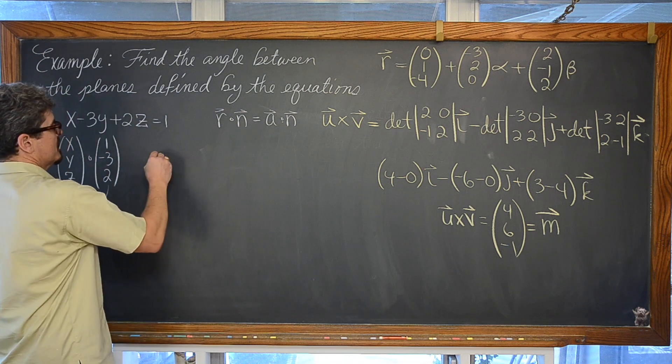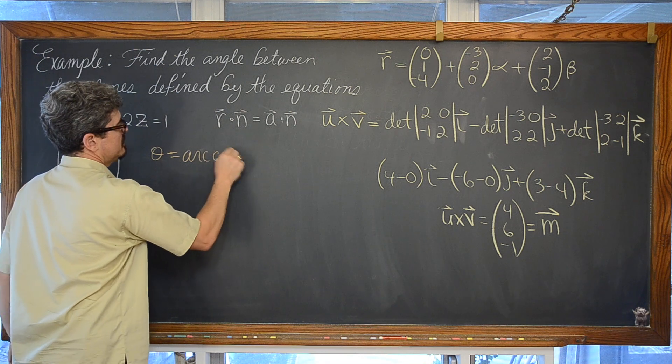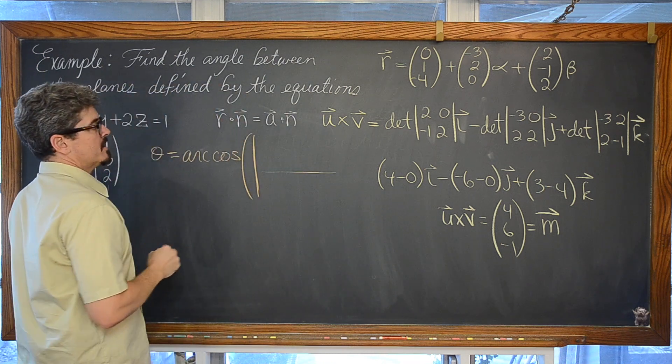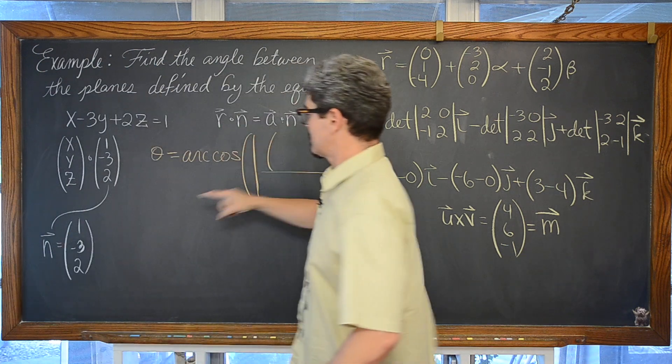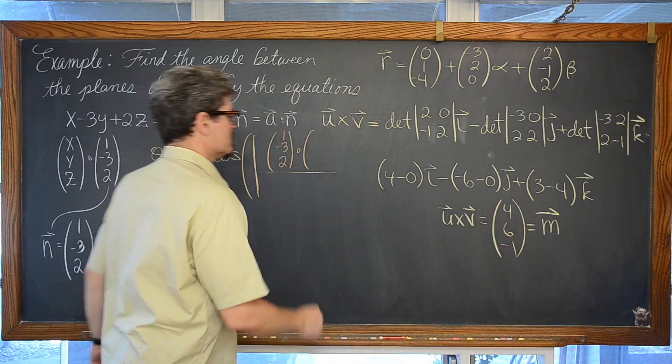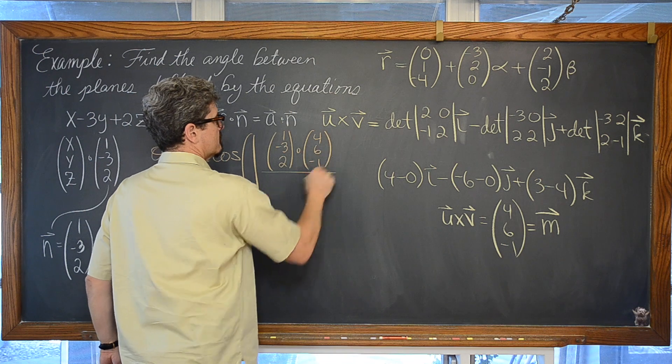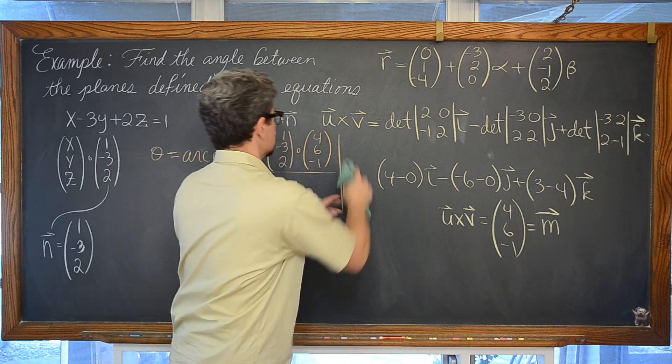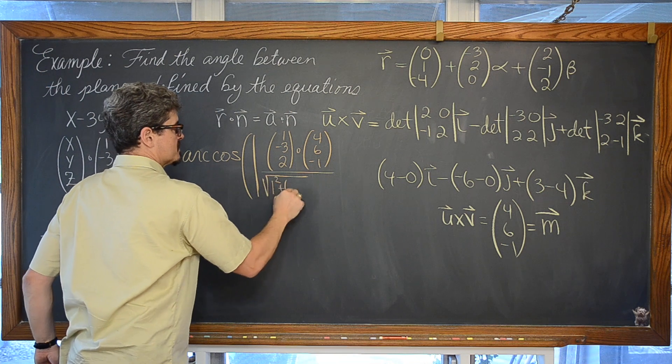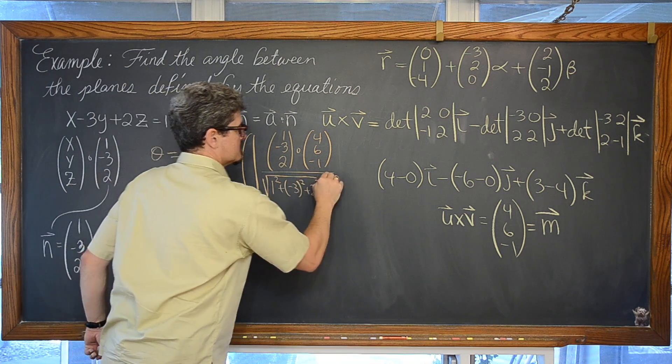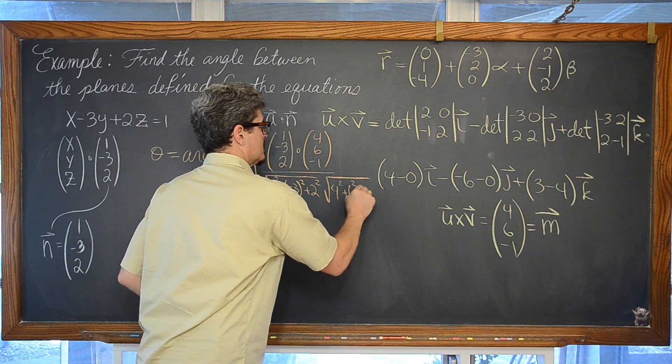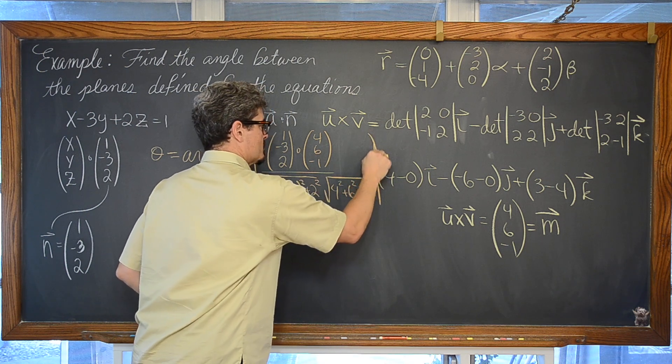Theta is going to be equal to the arc cosine of the absolute value of the dot product between vector n, which is 1, negative 3, and 2, dotted with this normal vector here of 4, 6, and negative 1. The magnitude of vector n is going to come from 1 squared plus negative 3 squared plus 2 squared times the magnitude of vector m, 4 squared plus 6 squared plus negative 1 squared.